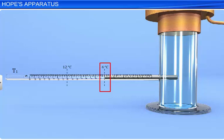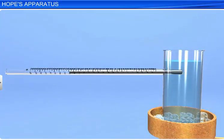At 4 degrees Celsius, the density of the water in this part of the jar is maximum. Thus, the dense water remains in the lower portion. However, the temperature recorded by thermometer T2 remains almost unchanged.